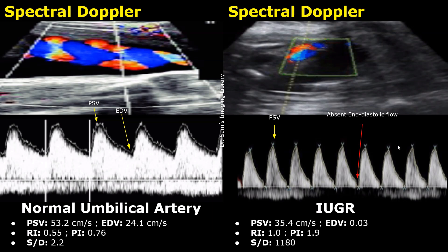This is a case of IUGR, and the umbilical artery shows a PSV of 35.4 centimeters per second, and the EDV is pretty much 0 — it is 0.03. We can see a small gap between each wave. This is showing absent end-diastolic flow because EDV is almost 0. The resistive index is elevated; it should not be more than 0.7, but here it is 1.0. The PI is also raised at 1.9. The SD ratio is extremely high because the EDV has a very small value — dividing 35.4 by 0.03 gives 1,180. These readings indicate severe placental resistance.